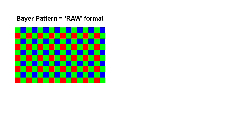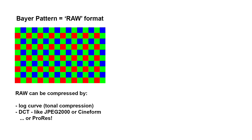Note that RAW formats can also be compressed. Every RAW format, for instance, has a tonal compression by applying a log curve, which brings the 16-bit linear signal from the sensor into a 12-bit log format, resulting in lower file sizes. Alternatively, or in addition to that, the file itself can be compressed using a DCT like JPEG-2000 or Cineform — or in our case, ProRes.